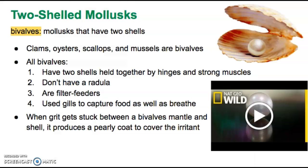The next phyla of mollusks are called bivalves. The prefix 'bi' means two — like a bicycle with two wheels or someone bilingual speaking two languages. A bivalve is a mollusk that has two shells, with 'valve' meaning shell. Clams, oysters, scallops, and mussels are all examples of bivalves. Every bivalve has two shells held together by strong muscles that collapse a hinge joint. Unlike gastropods, bivalves do not have a radula — they don't scrape food off surfaces. Instead they're filter feeders, using their gills both to breathe and to draw food into their bodies, similar to the sponges discussed in chapter one.